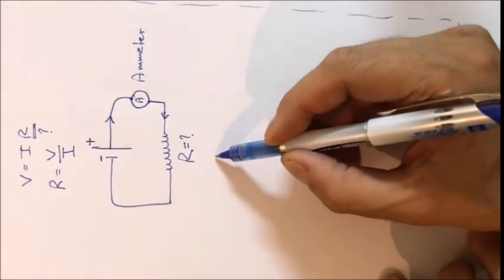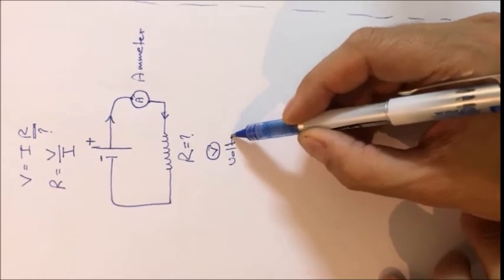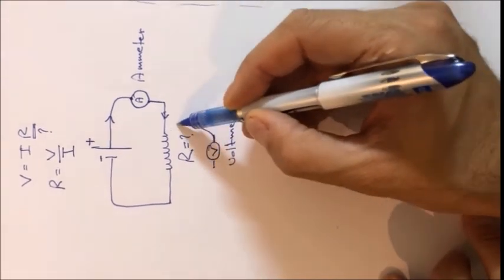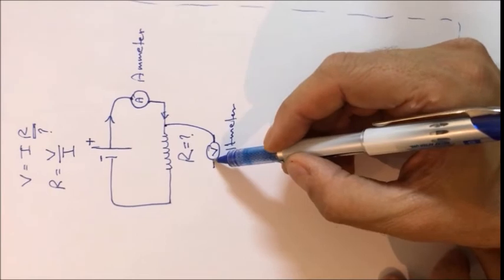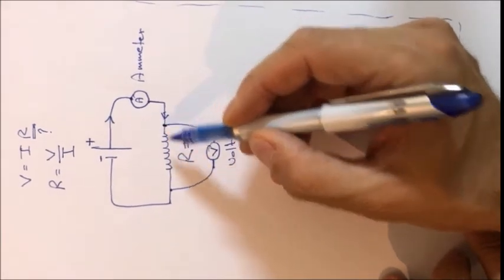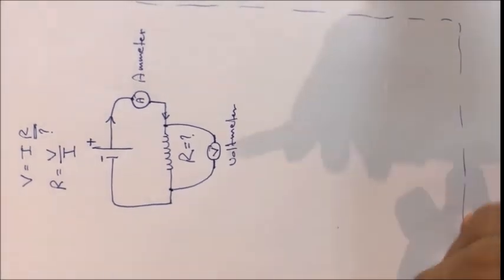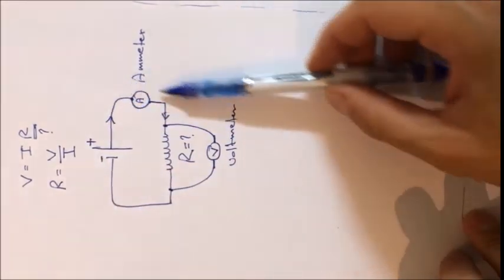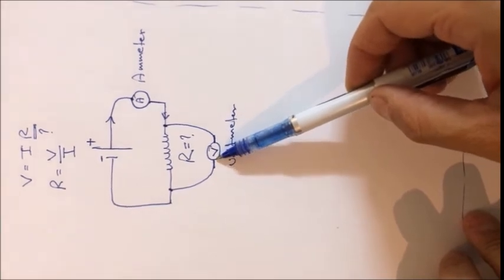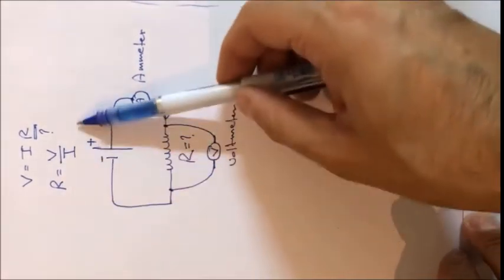We also need a voltmeter, which measures the voltage. The voltmeter has two terminals: one connected to one side of the resistance and the other connected to the other side, so it measures the potential difference across the two endpoints of the resistance. By measuring these two values and dividing the voltmeter reading by the ammeter reading, we get the value of the unknown resistance.